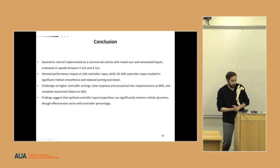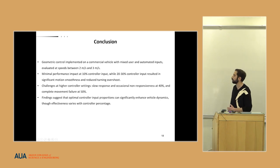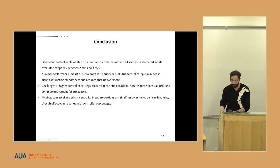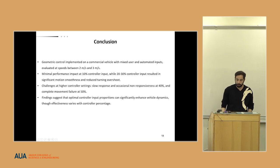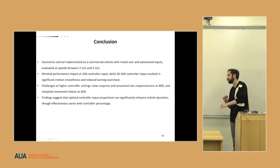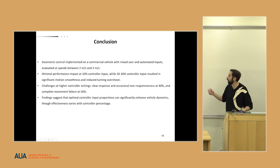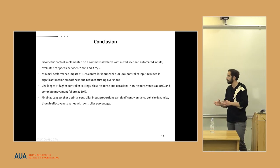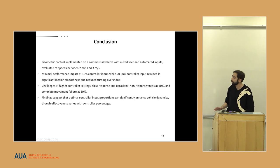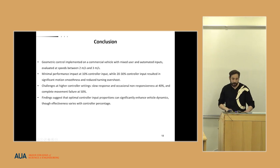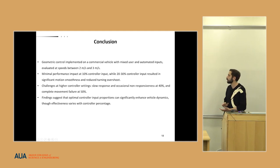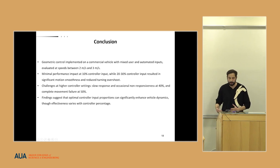For concluding, the implementation of the geometrical controller on our commercial product is mixed with user and automated inputs, evaluated at speeds between two and three meters per second. We can see that between 10 and 30 percent of controller inputs result in significant motion smoothness and reduced turning overshoot. However, there are challenges at higher controller settings: slow response and occasional unresponsiveness at 40 percent, and complete movement failure at 50 percent. Findings suggest that optimal control input proportions can significantly enhance vehicle dynamics, though effectiveness varies with controller percentage.